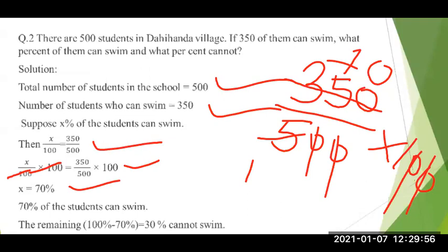So 70 percent of the students can swim. But they also asked about the students who cannot swim. Percentage is always calculated on 100, so 100 minus 70 equals 30. Therefore, 30 percent of the students are not swimming. Summary: 70 percent of students can swim, and 100 percent minus 70 percent equals 30 percent cannot swim.